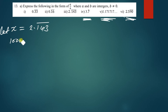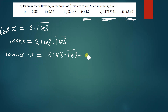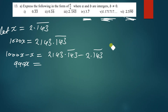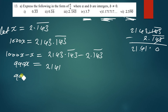Now subtract x from 1000x: 1000x − x = 2143.143̄ − 2.143̄. The repeating decimals cancel. On the left we get 999x. On the right: 2143.143̄ minus 2.143̄ — the decimal parts cancel, giving 2143 − 2 = 2141. So 999x = 2141.